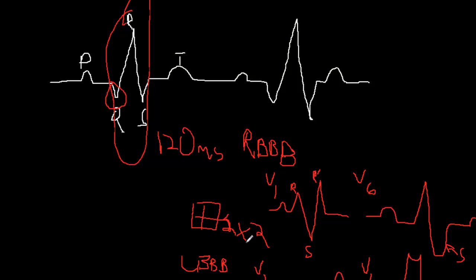If you have a bundle branch block, or the best leads to figure out a bundle branch block. And that makes sense. So those are pre-cordial leads. They're looking right at the heart. So if there's an issue with conduction in the heart, those are going to be the ones to sort of get the best picture of it.